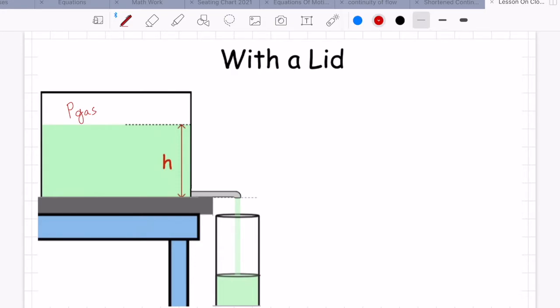We can call that pressure inside that pocket of gas, pressure of the gas. We still have atmospheric pressure at the outlet for our faucet. These two pressures are no longer necessarily the same. Chances are they won't be.